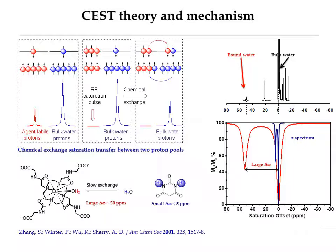If you selectively saturate the bound-water signal with a pre-saturation pulse and then collect bulk-water signal intensity, you will find the bulk-water signal intensity decreases significantly at around 50 ppm. This curve is called the CEST Z-spectrum. In fact, you can get a similar CEST Z-spectrum from small diamagnetic molecules like butyric acid. However, the problem with diamagnetic CEST MRI is the chemical shift difference between two proton pools is so small that you cannot avoid the direct saturation of bulk-water protons when acquiring CEST signals.